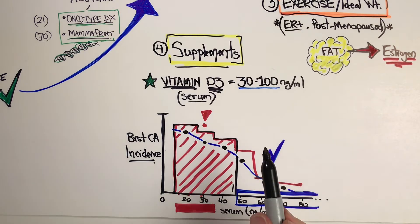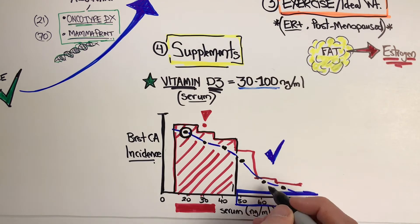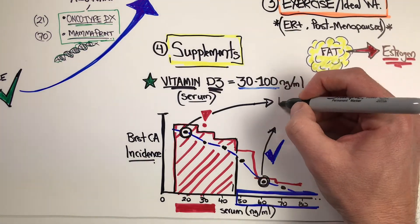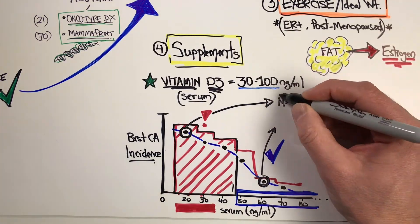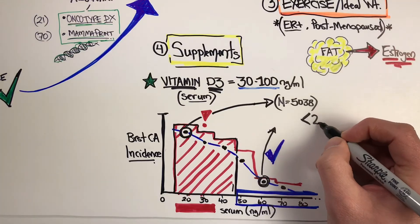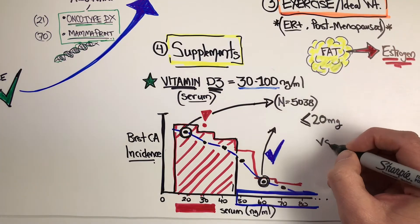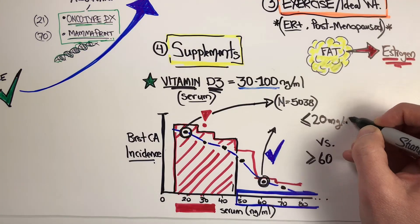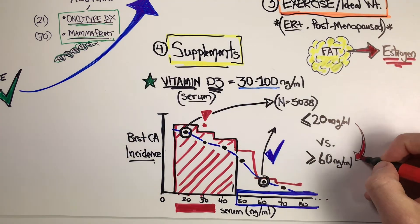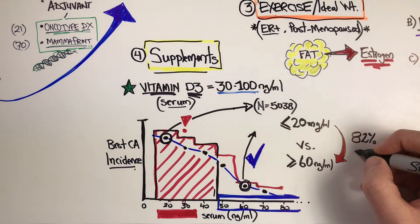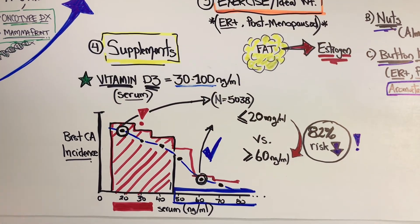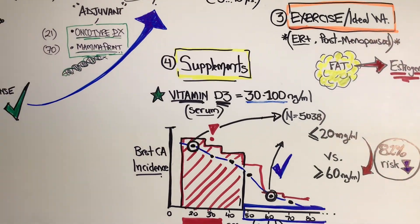This is a study from 2018. They compared the lower range to the higher range, 60 plus, in a study of over 5,000 women. If you were in the lower range versus above 60 nanograms per mil, the benefit was massive. It dropped the incidence and the risk by 82 percent if you move up high within the Vitamin D range. So it should be tested, certainly in all breast cancer cases.